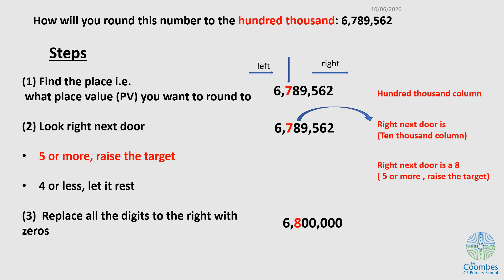We have another number. It says round this number to the nearest hundred thousand. The number is 6,789,562. I'm going to follow my steps again. The first step was to find the place. It's in the question, 100,000. If I look at my number, that's the unit, 10, 100, thousands, tens of thousands, 100,000. So this is the place. This is the digit that they want me to round to.